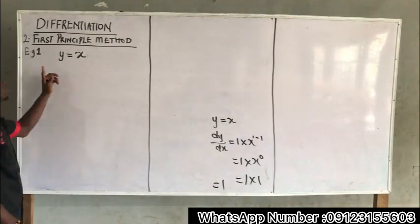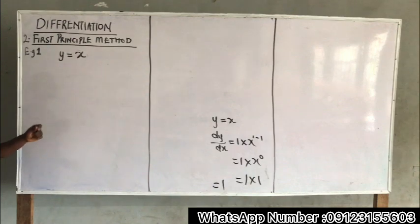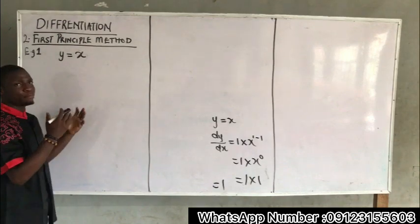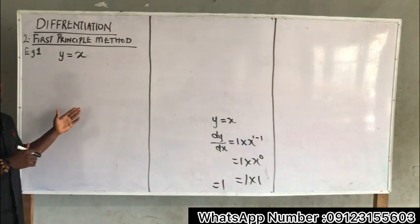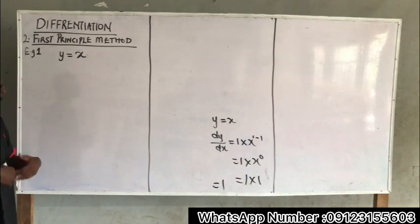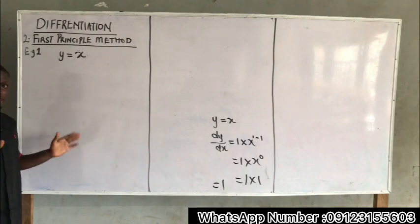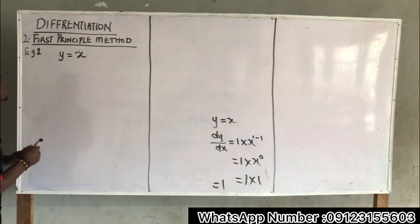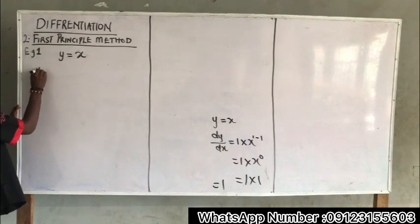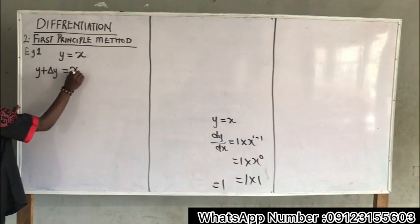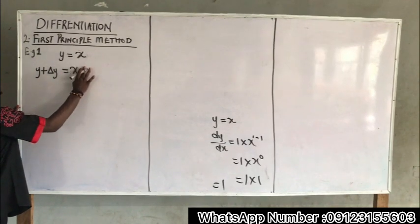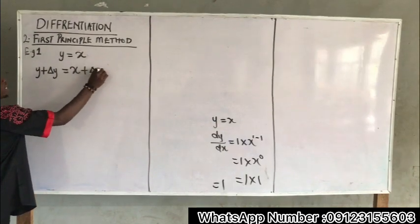Now let's see if the first principle method also gives 1. What is the concept behind the first principle method? The idea is: to y, add change in y (Δy); to x, add change in x (Δx). That's all.